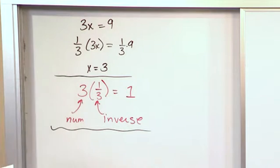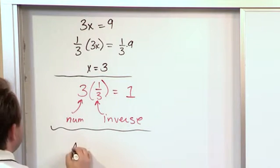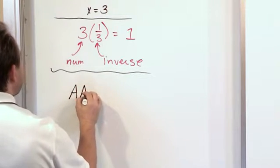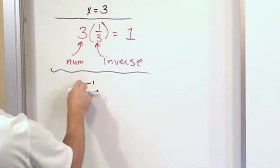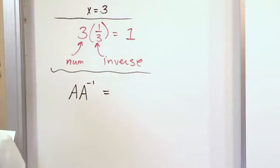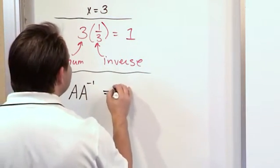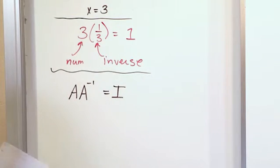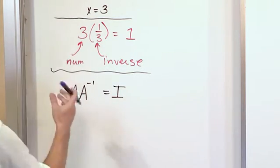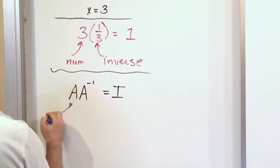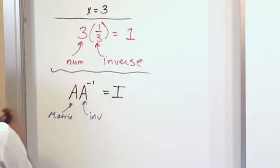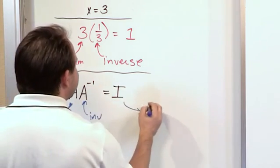So ultimately what we want to do for matrices is if we're given a matrix A, we want to figure out what matrix can we multiply it by. We'll denote it by A to the negative 1, that means inverse, to give us, well obviously it's not going to give us a number 1, it's going to give us an identity matrix. Remember we talked about an identity matrix. So this guy is just some matrix, this guy is the inverse of this matrix, and this guy is an identity matrix.